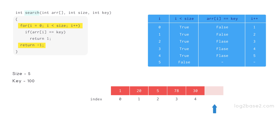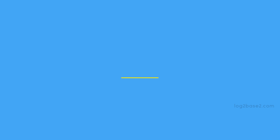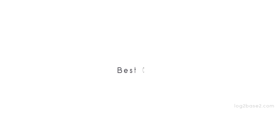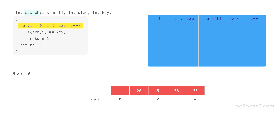So this is how it works. Now let us talk about the time complexity. The best case will be when the key is present in the first position of the array. Then the for loop will only work for one iteration and break. So the best case time complexity will be O(1).